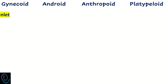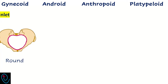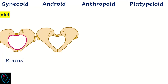Regarding pelvic inlet, in gynecoid pelvis the inlet is round-shaped or slightly transversal oval, so head engagement occurs in occipital lateral or oblique occipital anterior position. In android pelvis, the inlet is heart-shaped with a narrow anterior part, so head engagement occurs in occipital lateral or oblique occipital posterior position.